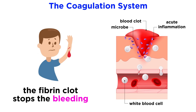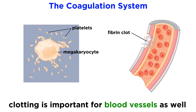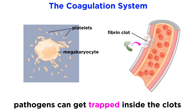Another important plasma protein cascade is the coagulation system that results in a fibrin clot. Blood clotting is important when there is an actual wound and someone needs to stop bleeding. However, local blood clotting in the microvessels of inflamed tissue also helps prevent the spread of pathogens through the bloodstream, and some pathogens can even be trapped inside fibrin clots.